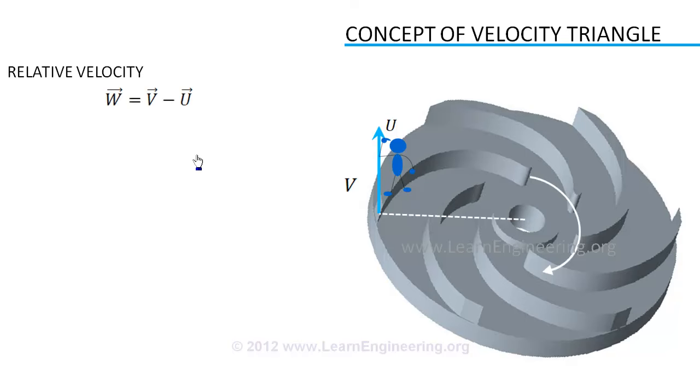For a stationary device, you know, flow should be tangential to the blade in order to have smooth operation. Similarly in a moving device, relative velocity should be tangential to blade profile. You can rearrange this equation and say U plus W is absolute fluid velocity. Similar velocity triangle can be made on inlet of turbomachine.